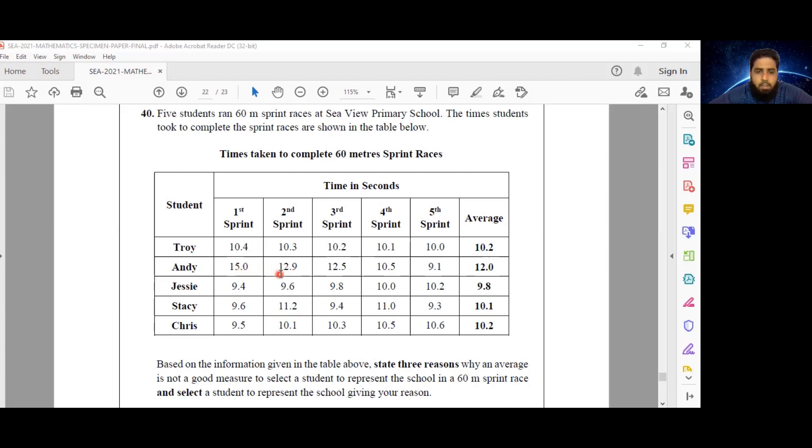His trend in terms of his running time has been coming down. From 15 to 12.9 to 12.5 to 10.5 to 9.1. So he has the greatest improvement if you look at the first to the fifth sprint.